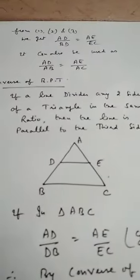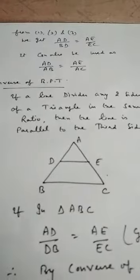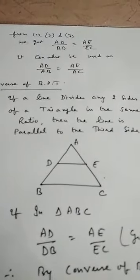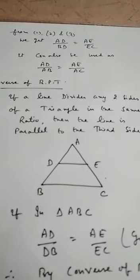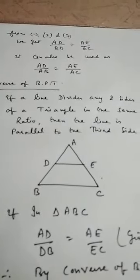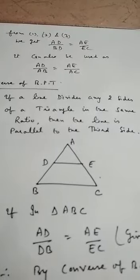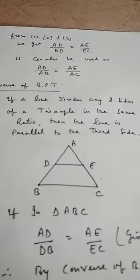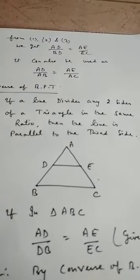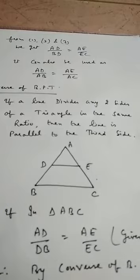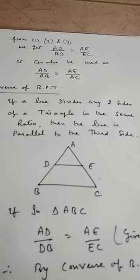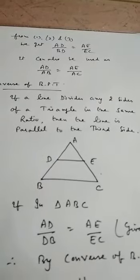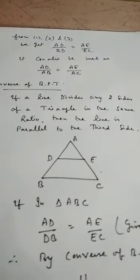We use this third result for equations 1 and 2. Since the numerators are already equal (area of ADE) for both equations, and we have proved that the denominators — area of BDE and area of CDE — are equal, the right-hand sides of equations 1 and 2 must be equal. Therefore, AD by BD is equal to AE by EC. This is the result of BPT or Thales theorem: if a line is parallel to one side of a triangle, it divides the other two sides in the same ratio.